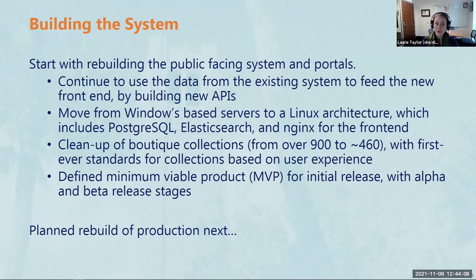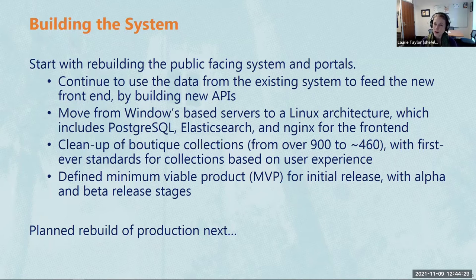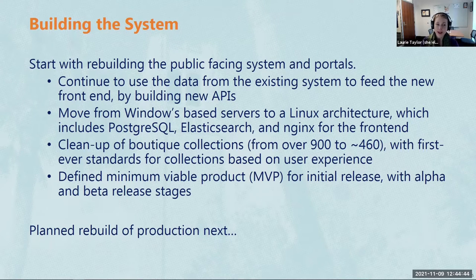The development gave us the opportunity to move from a Windows-based server environment with IIS and Microsoft SQL to a Linux architecture, and we're also using Postgres, Elasticsearch, and Nginx for the front-end. We also undertook a cleanup of our collections — we had over 900 collections in a very boutique structure, and now we're down to about 460. We've put in place better standards for collections based on user experience; a collection probably shouldn't have only two items, as that doesn't add value and can be confusing. This work ensures the system is as usable and user-focused as possible.